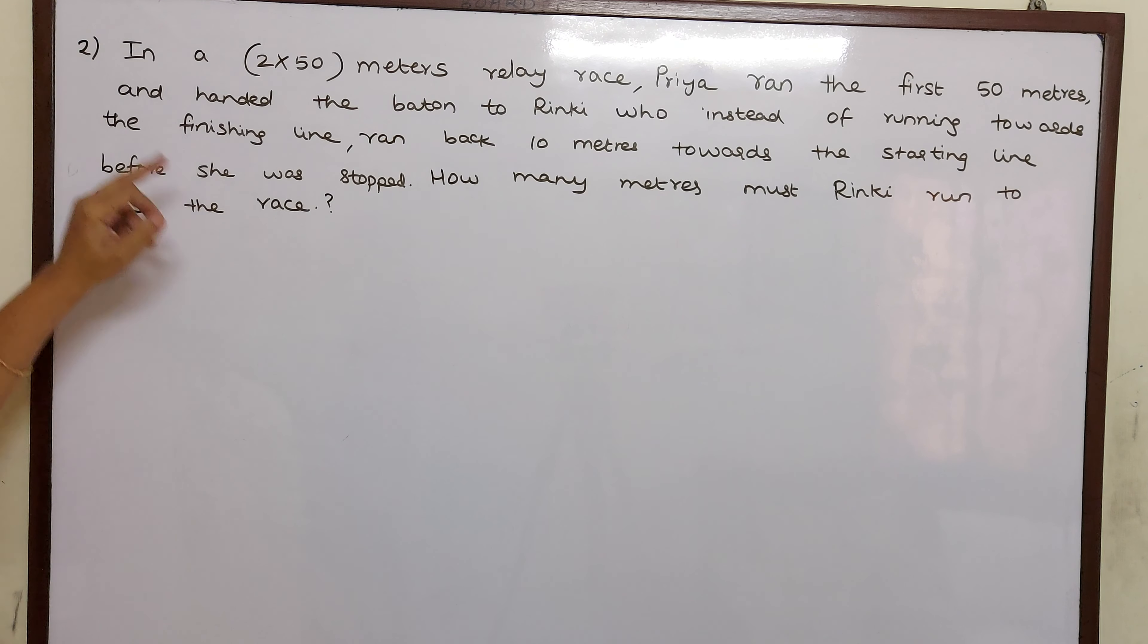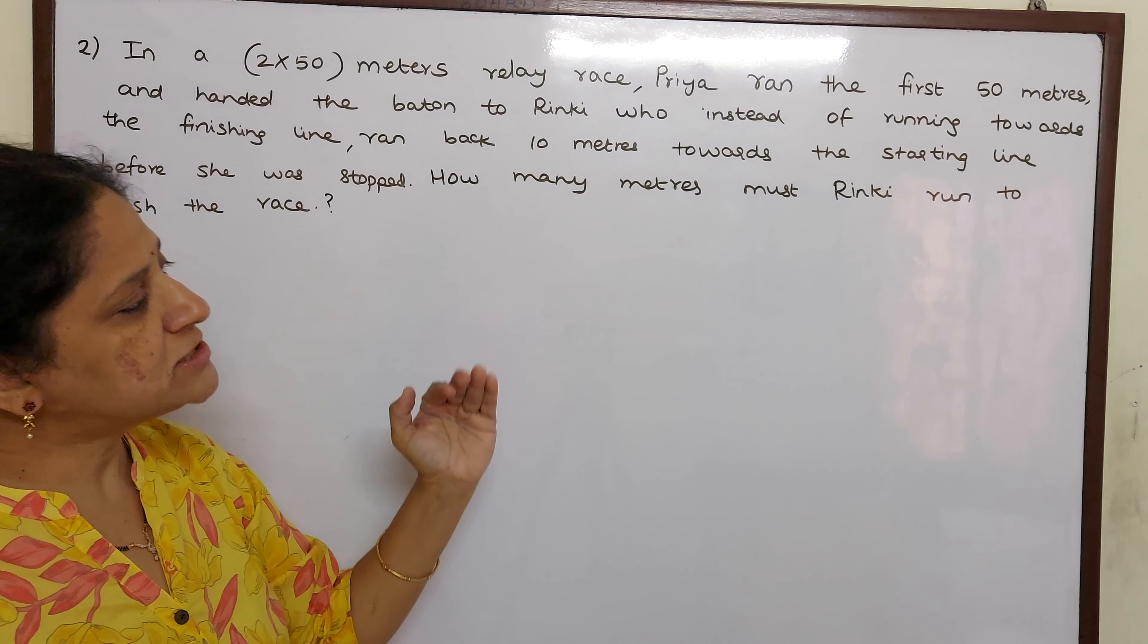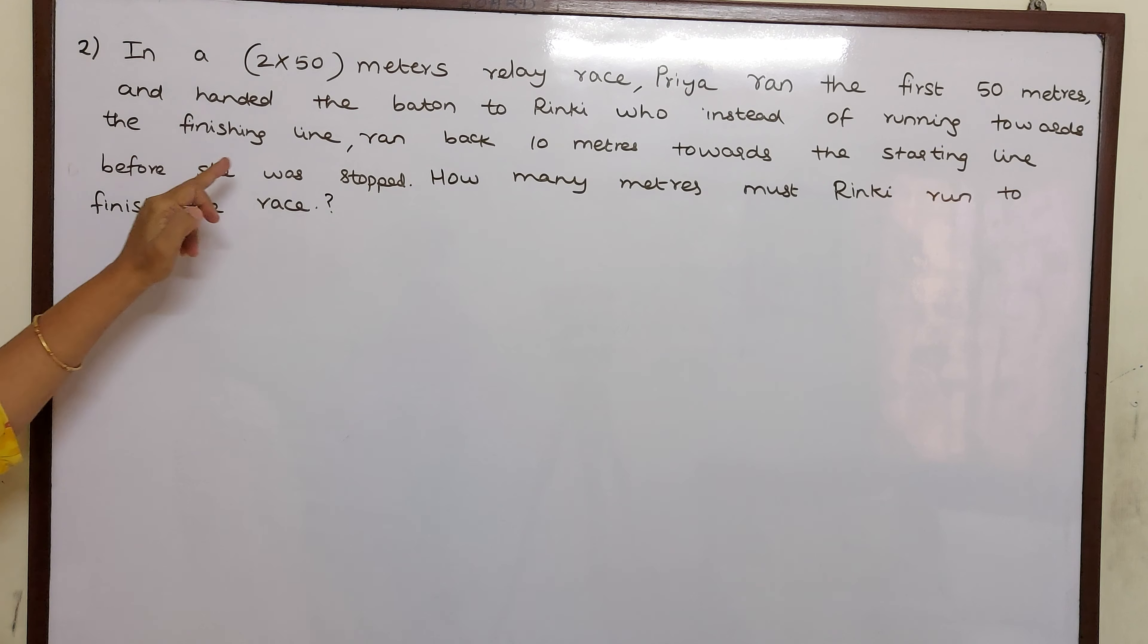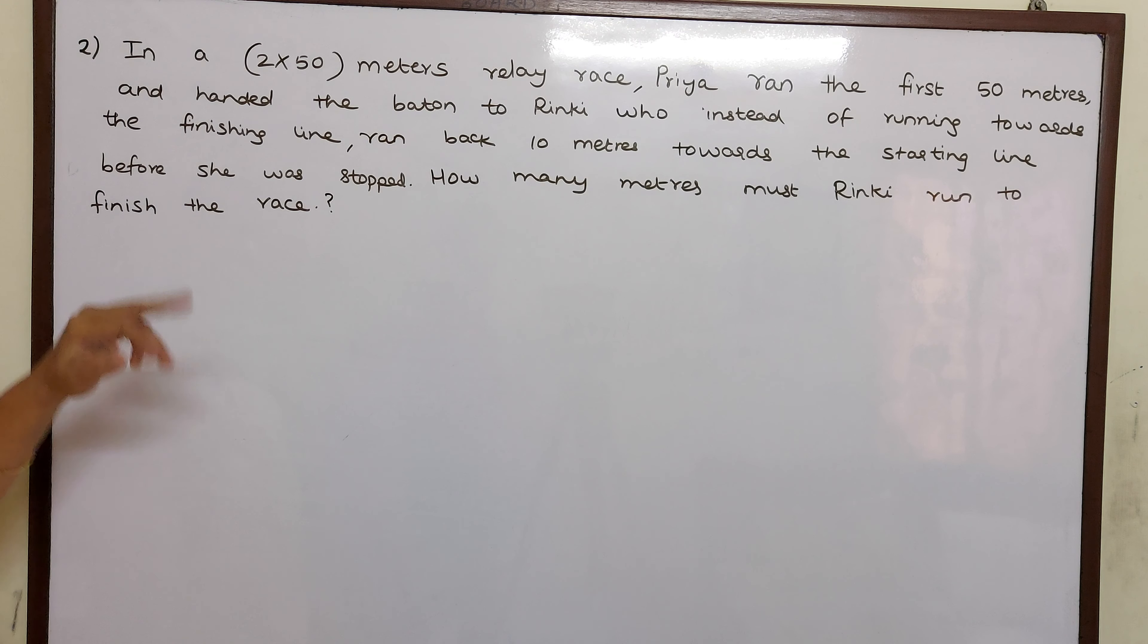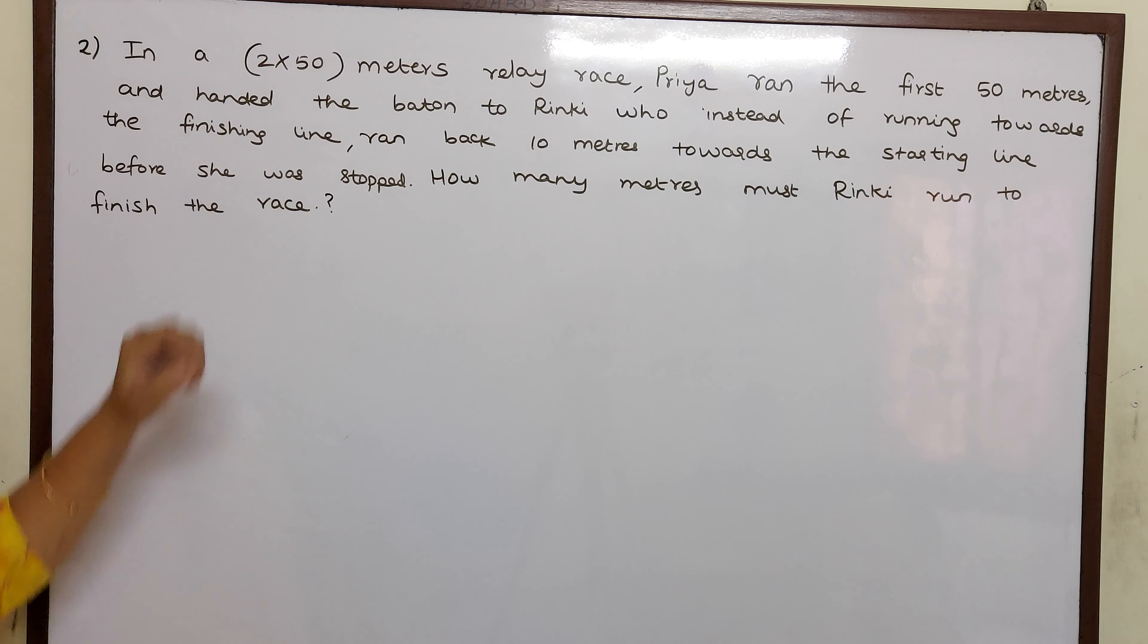Priya ran the first 50 meters and handed the baton to Rinky, who instead of running towards the finishing line, ran back 10 meters towards the starting line before she was stopped. How many meters must Rinky run to finish the race?